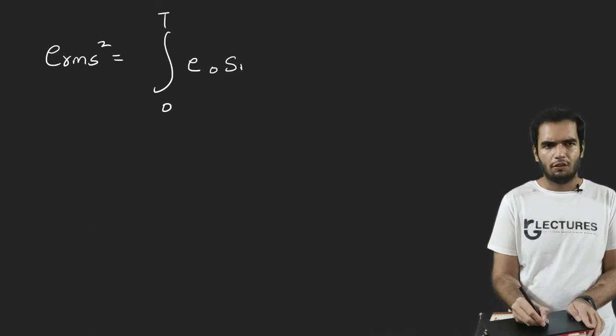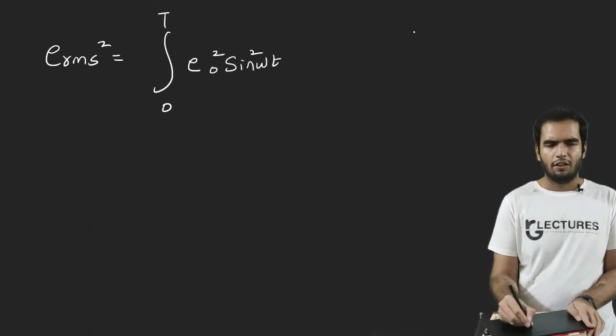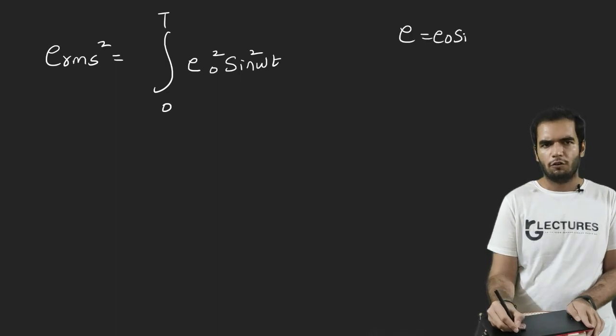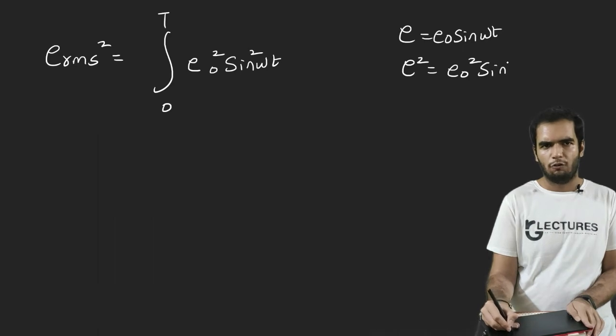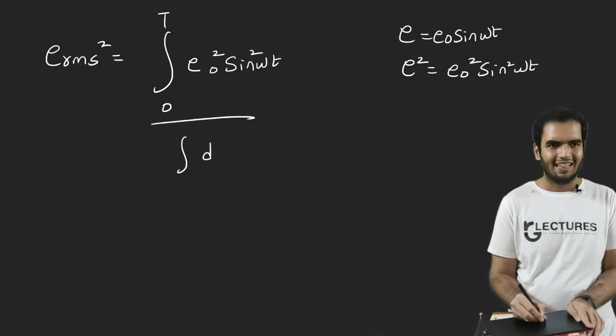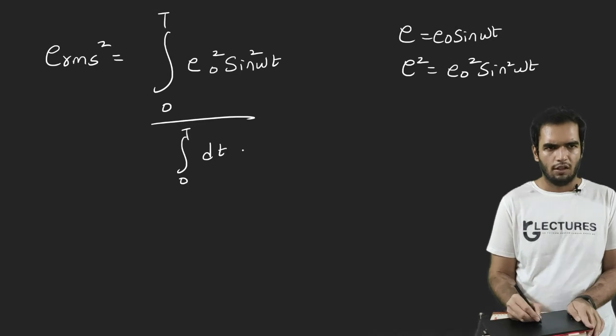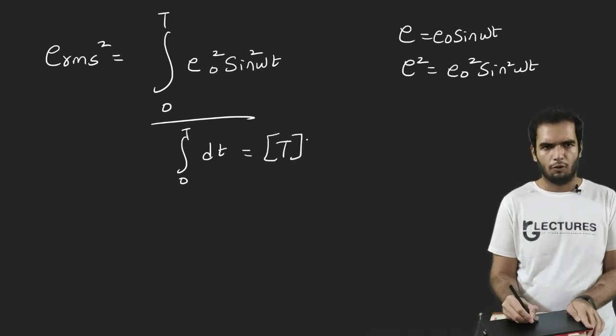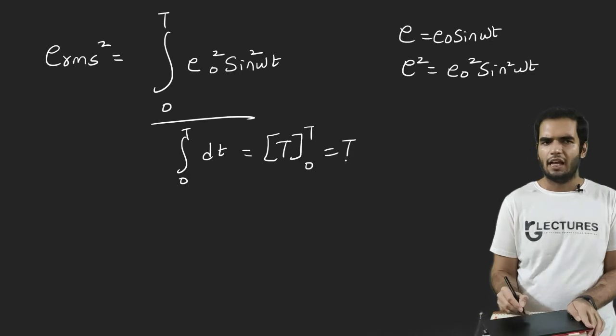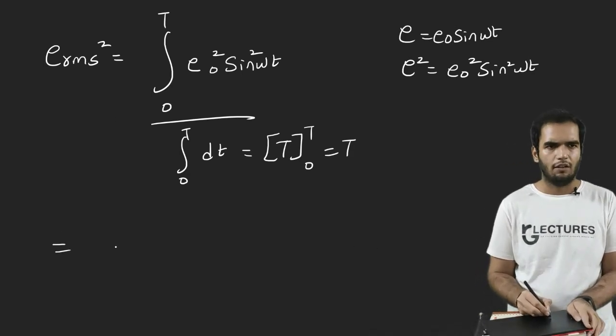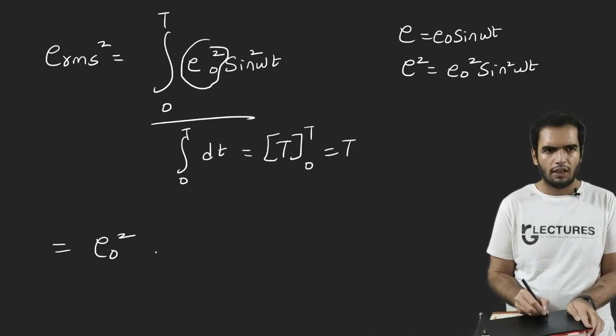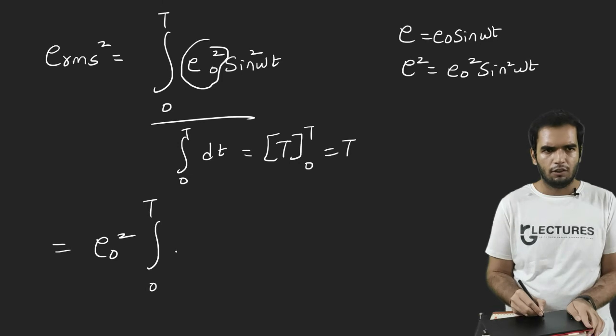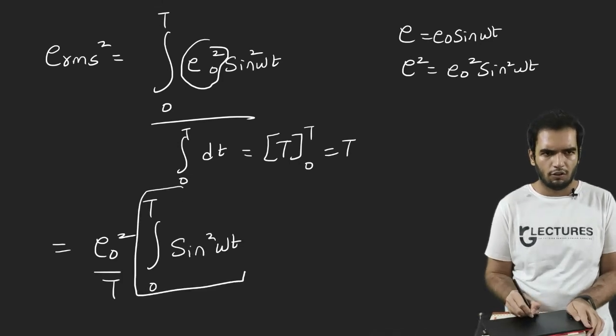And what is E? E0 sine of omega T. But I have to square it. E was equal to E0 sine omega T. But if I square it, it becomes E0 square, E naught square sine square omega T. And integration dT ranging from zero to T. If I solve the denominator, I will get T here. And finally, again, I will get T here. So I will remove the T. I will let it. I will focus on the integral part. This is a constant. So it will come out of the integration. And what I am left with is this term and the T in a denominator. So let's focus on this integral first.